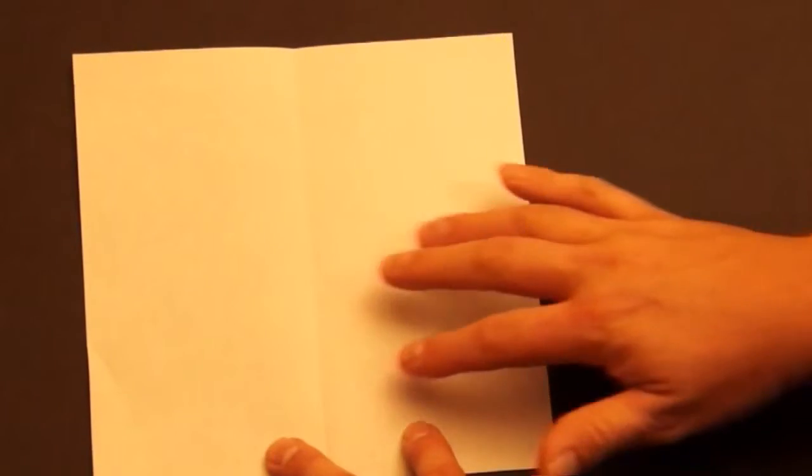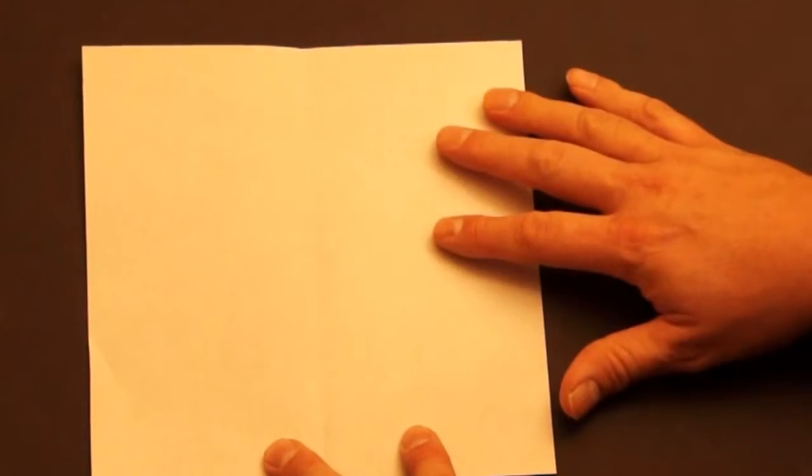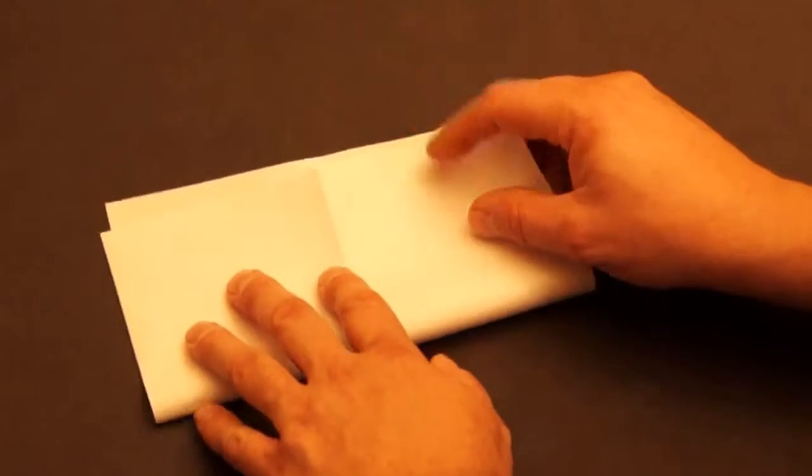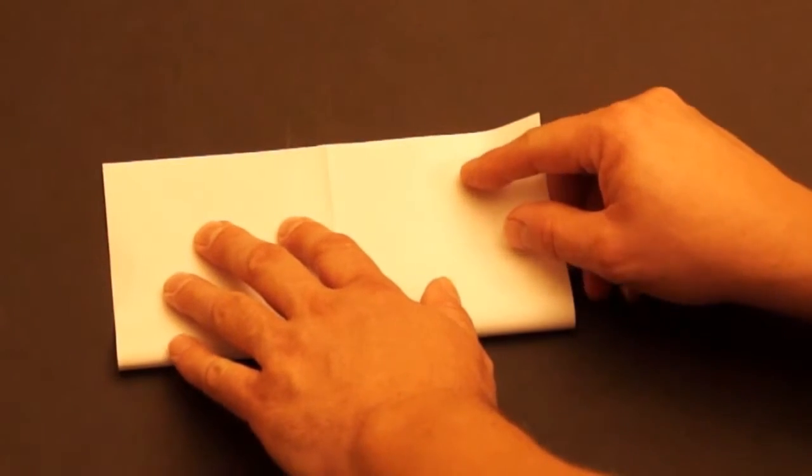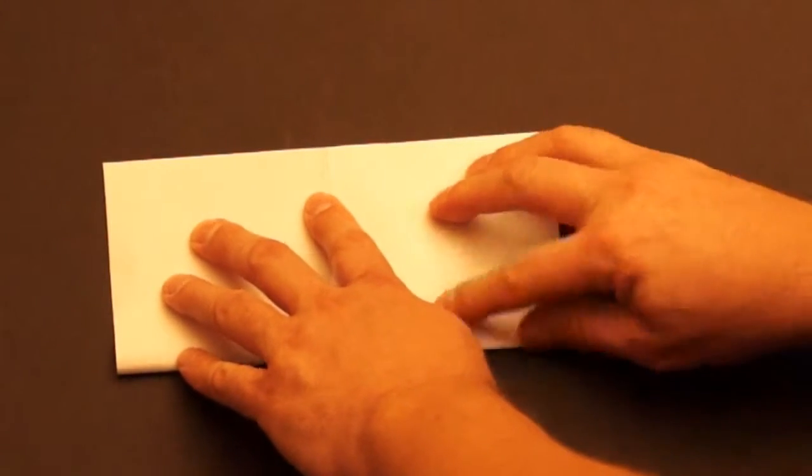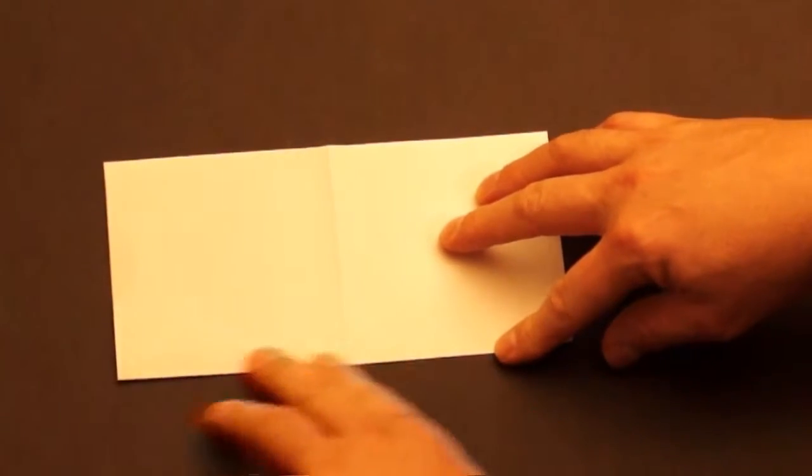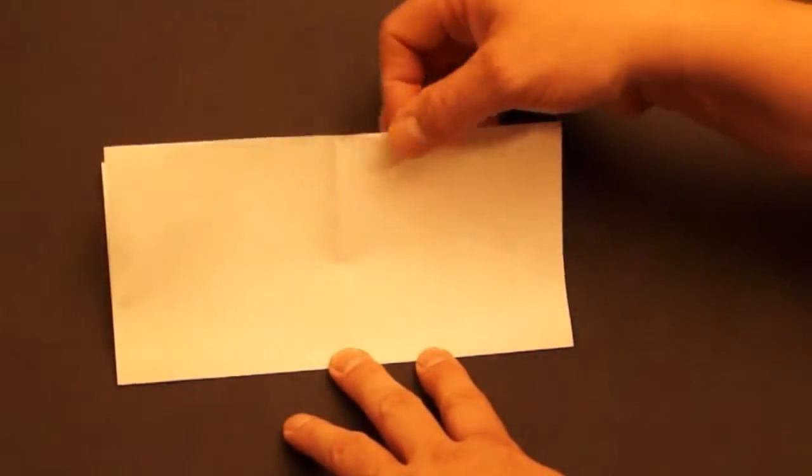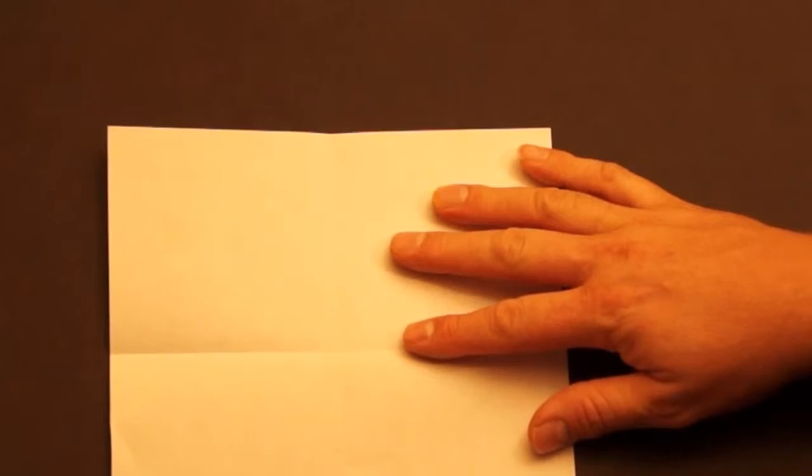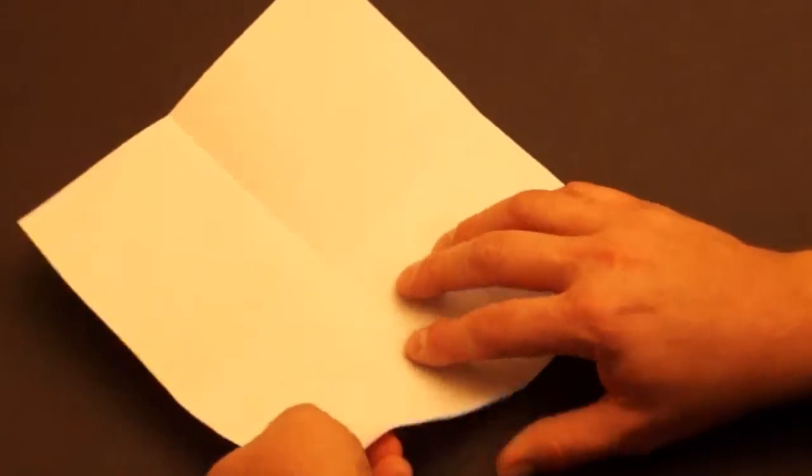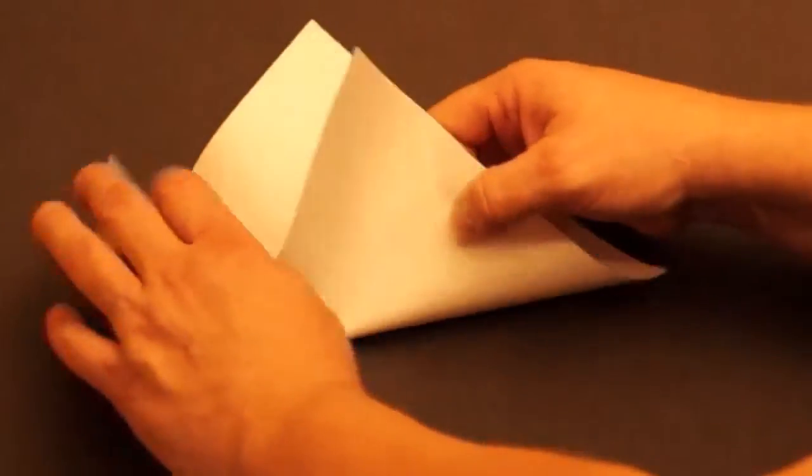Fold the bottom to the top, then open it up. Then we turn it like a diamond, fold the bottom to the top. We fold it in half like a triangle.